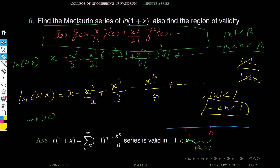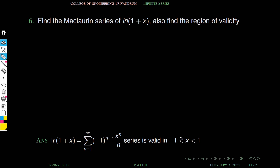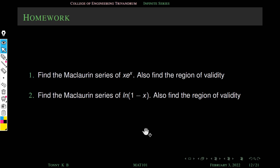So this is the region of validity of this problem. The compact form of the Maclaurin series of log(1+x) is sigma n equals 1 to infinity of (−1)^(n−1) times x^n over n, valid in the interval mod x less than 1. The general term corresponding to x^n is x^n over n factorial times (−1)^(n−1) times (n−1) factorial, which simplifies to (−1)^(n−1) times x^n over n. This is your homework. Thank you.